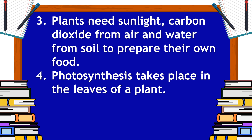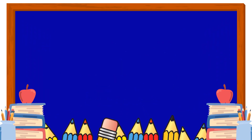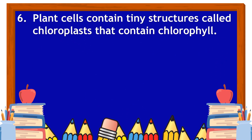Leaves have tiny pores called stomata through which carbon dioxide enters the plant. Plant cells contain tiny structures called chloroplasts that contain chlorophyll.